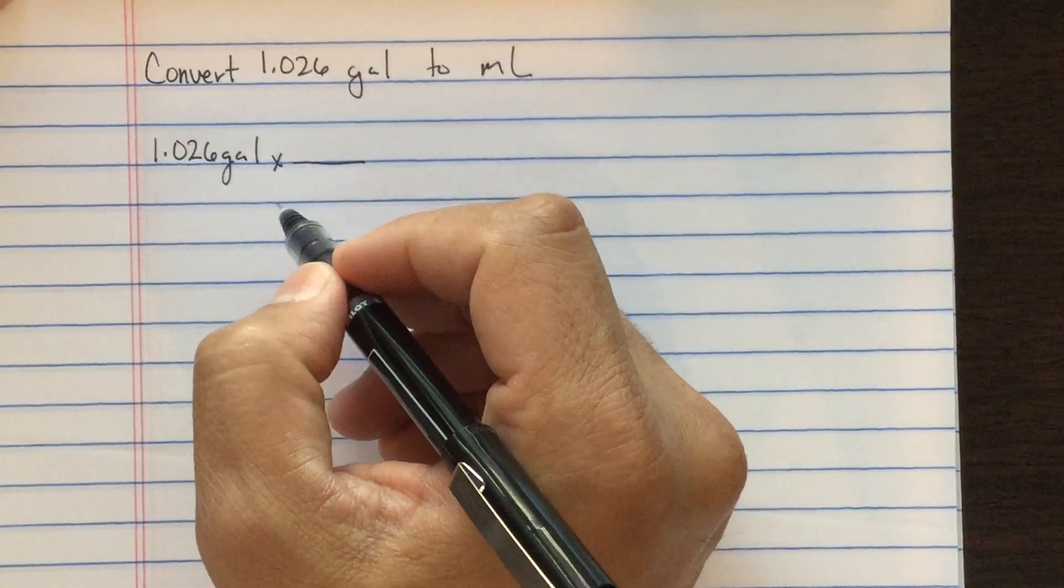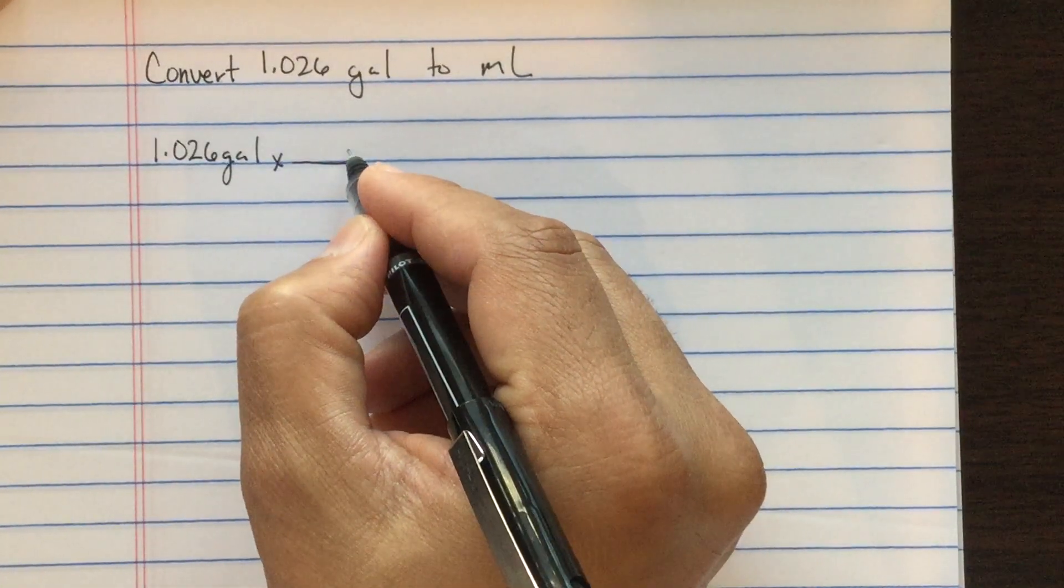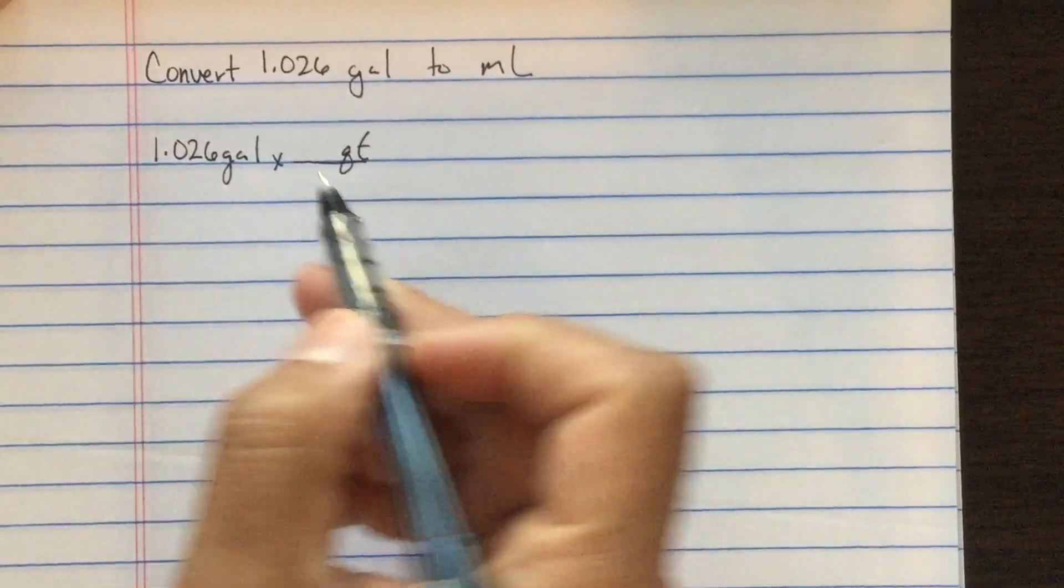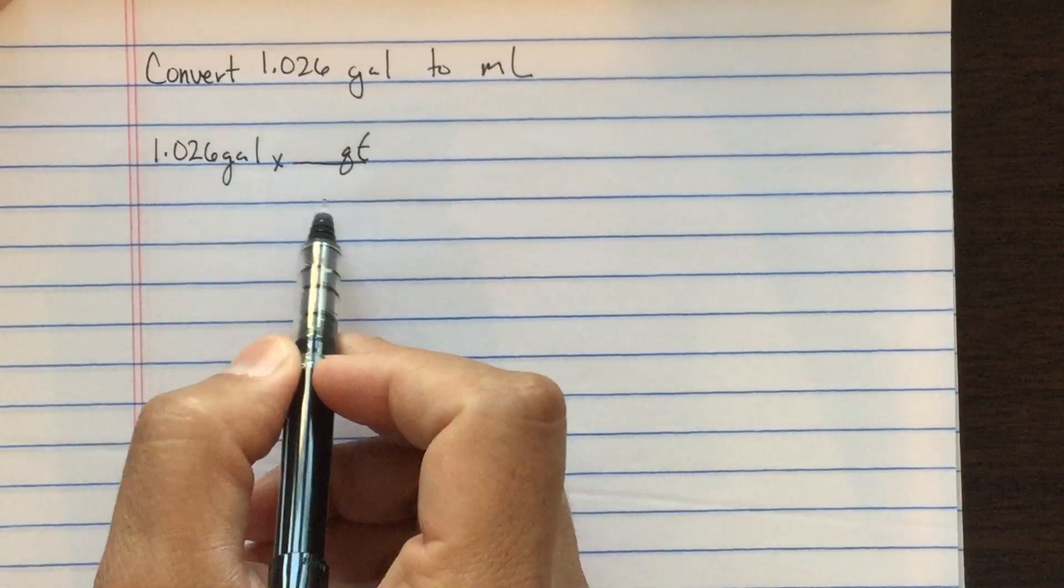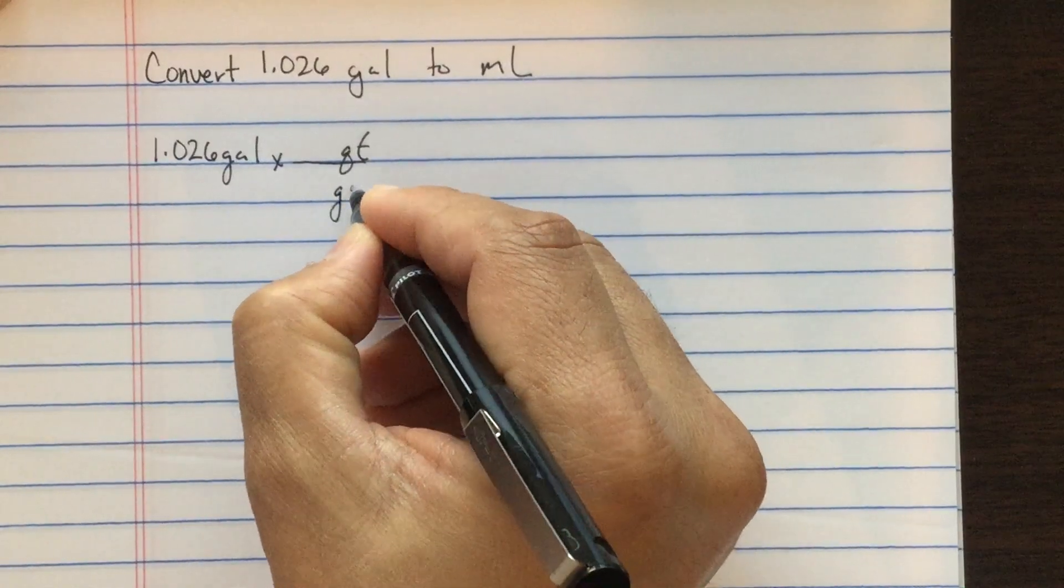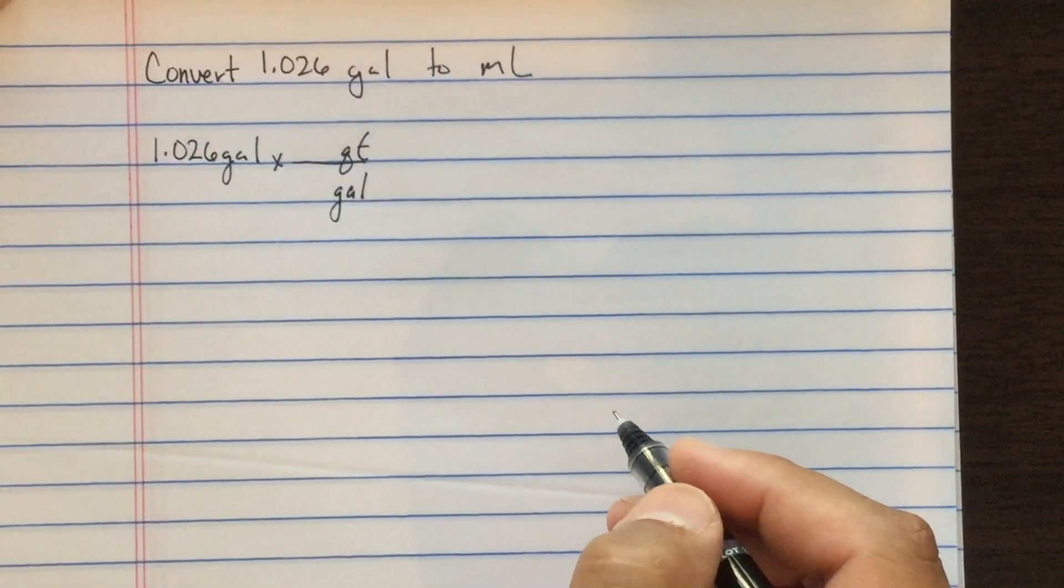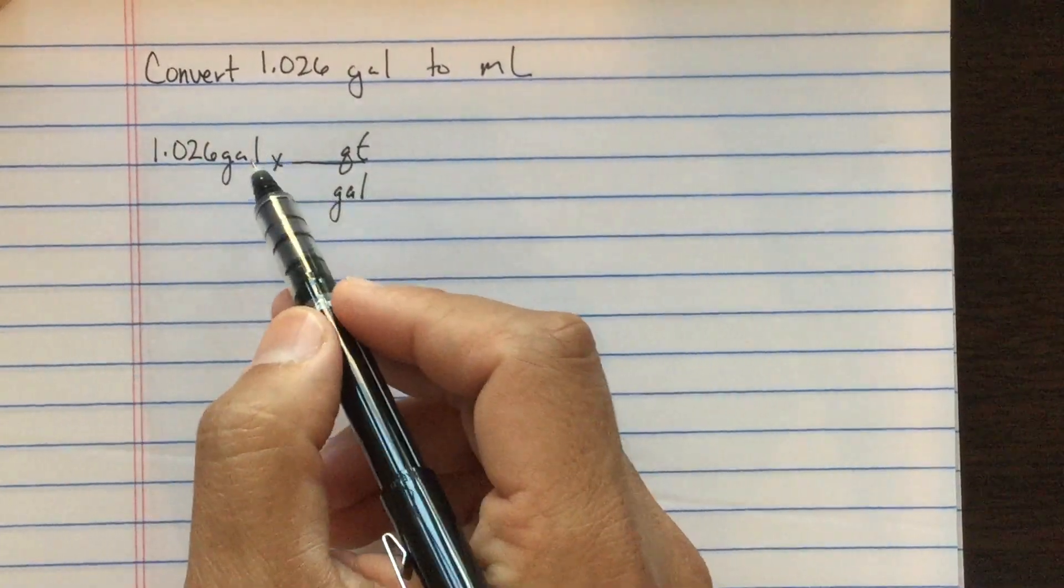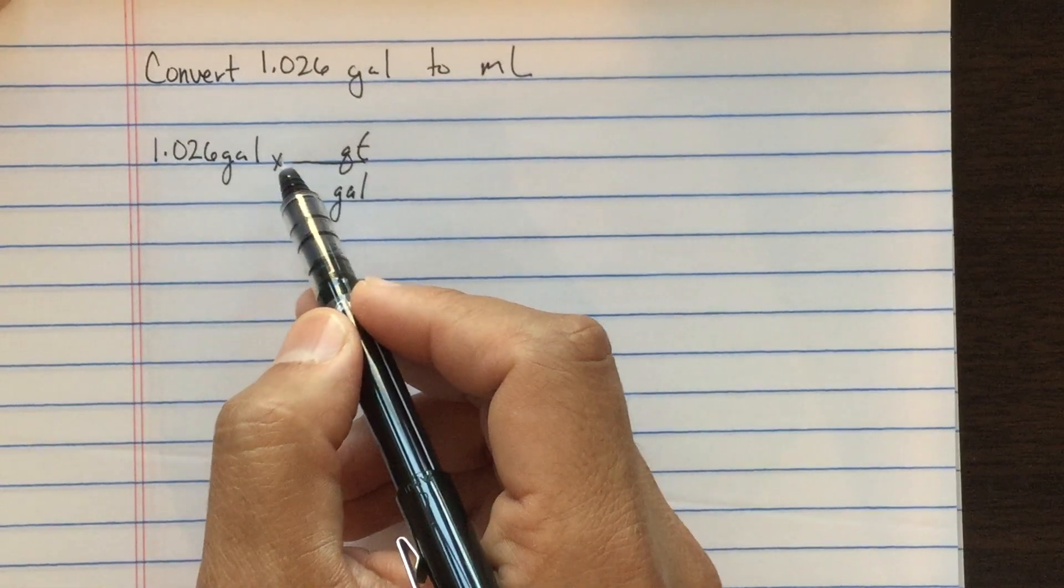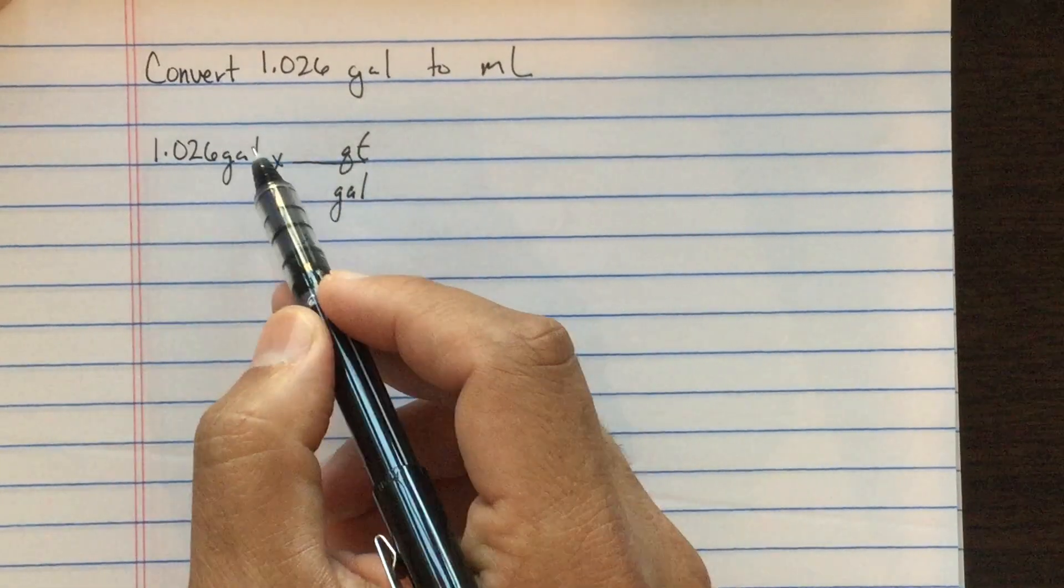First we're going to convert the gallons into quarts, and we want to cancel gallons so that goes in the denominator. Right here, gallons times quarts over gallons - gallons over gallons will cancel.